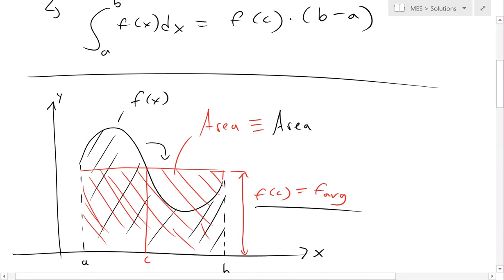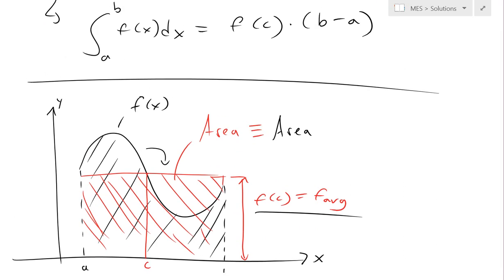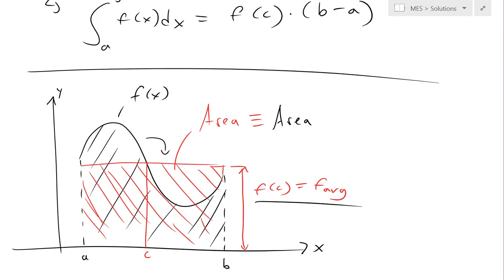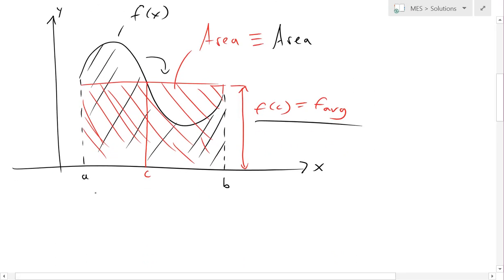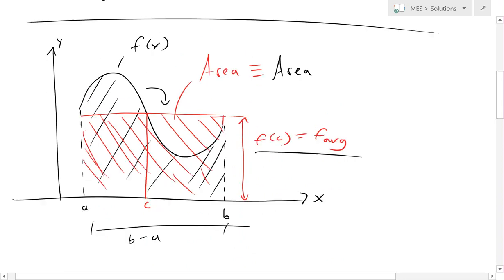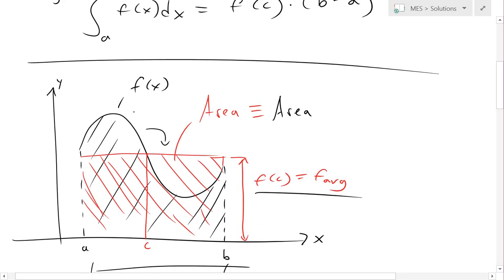Graphically, you can see it as basically an area where f(c) is equal to the average of the function f(x), and you get a rectangle with the width of (b minus a), and this rectangle has the same area as the area under the curve from a to b.